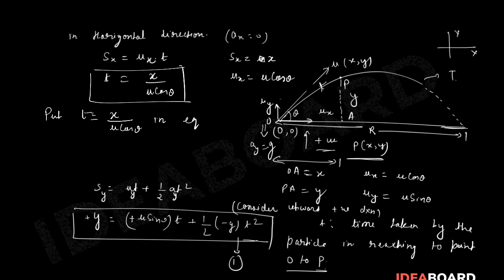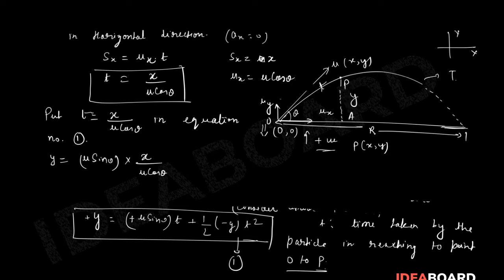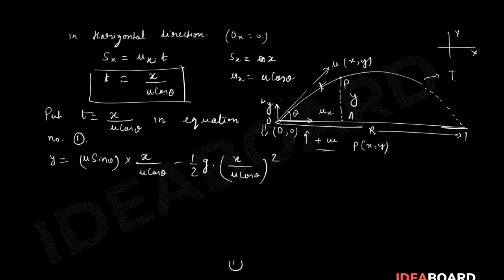Now substituting t = x / (u cos θ) into Equation 1: y = u sin θ · (x / u cos θ) − ½ · g · (x / u cos θ)². We can now simplify this expression to get the final equation of trajectory.